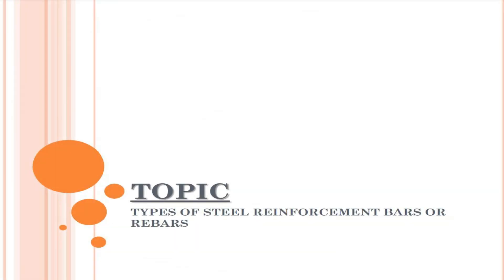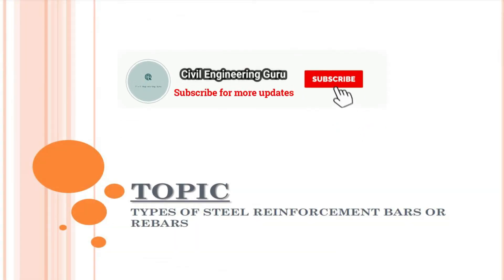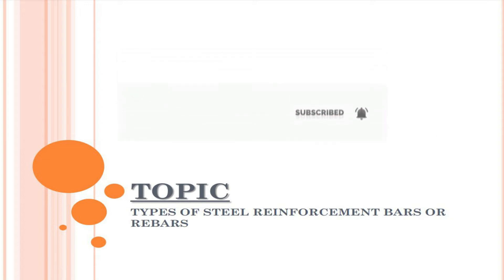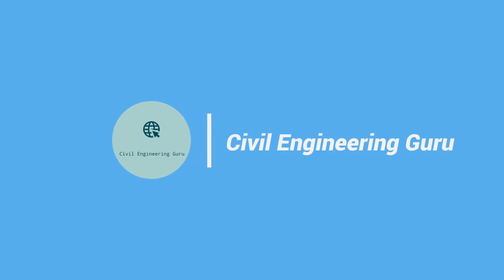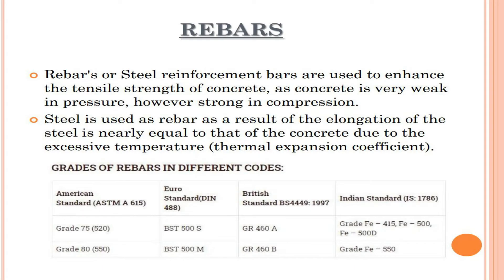Hey guys! Today our topic is types of steel reinforcement bars or rebars. Rebars or steel reinforcement bars are used to enhance the tensile strength of concrete, as concrete is very weak in tension however strong in compression. Steel is used as rebar as a result of the elongation of the steel being nearly equal to that of the concrete due to the thermal expansion coefficient.